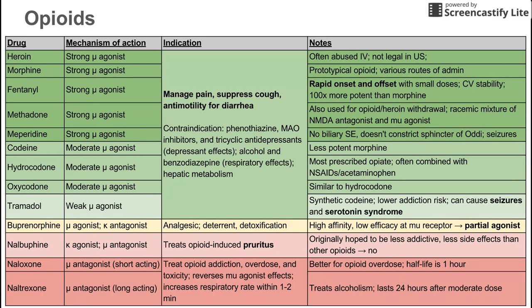You cannot use them with other drugs, including MAO inhibitors and tricyclic antidepressants. They suppress the respiratory system, so you should not use them with alcohol and benzodiazepines. They also undergo hepatic metabolism, so you want to avoid or at least consider interactions with other drugs that are also hepatically metabolized.